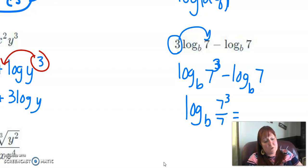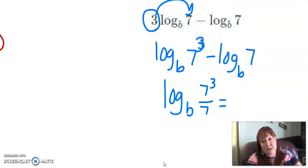And sometimes you can just leave it, but I mean, that's obvious, right? That's obvious that can be simplified. Seven cubed over seven. One of those sevens cancels out with one of these sevens, and I'm left with two sevens up here. So I have log base b of 49.